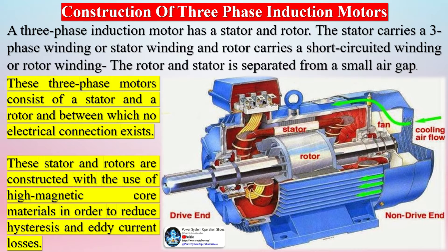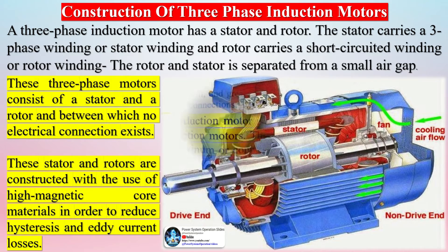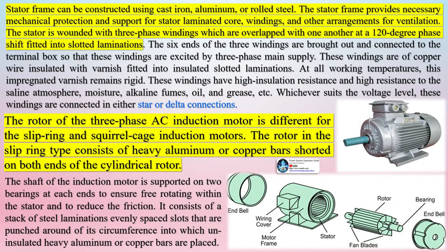The stator frame can be constructed using cast iron, aluminum, or rolled steel, providing necessary mechanical protection and support for the stator laminated core, windings, and ventilation arrangements. The stator is wound with three-phase windings overlapped with one another at a 120-degree phase shift, fitted into slotted laminations. The six ends of the three windings are brought out and connected to the terminal box so that these windings are excited by the three-phase main supply. These windings are of copper wire insulated with varnish, fitted into insulated slotted laminations.